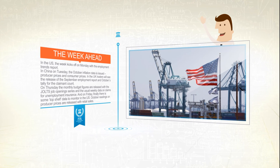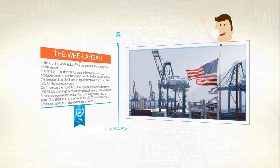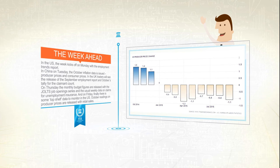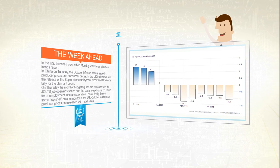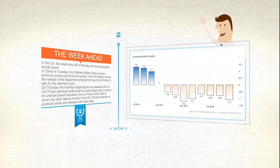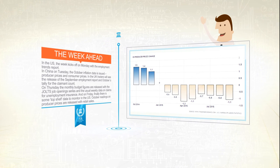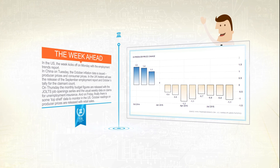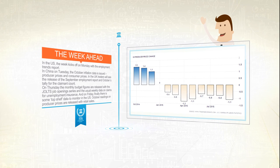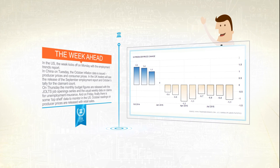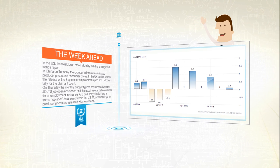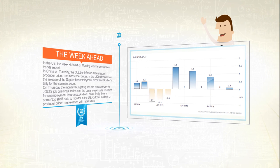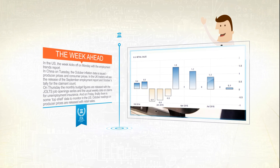There are also the preliminary consumer sentiment figures to watch. Economists expect that core producer prices probably rose 0.1% in October with the annual rate near 0.8%. Meanwhile, retail sales may have lifted to a healthy 0.4% in October.